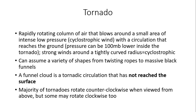Tornadoes can assume a variety of shapes, from a twisting rope shape to more of a massive black funnel. I want to distinguish between a tornado and a funnel cloud. A funnel cloud is an actual tornadic circulation, but the big difference is that a funnel cloud has not reached the surface. A tornado does reach the surface — the circulation gets all the way to the ground, whereas a funnel cloud does not.